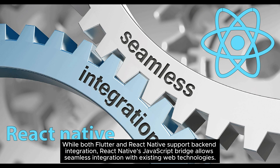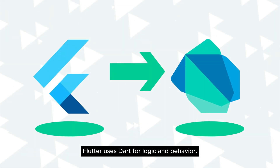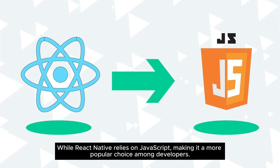While both Flutter and React Native support backend integration, React Native's JavaScript bridge allows seamless integration with existing web technologies. Flutter uses Dart for logic and behavior, while React Native relies on JavaScript, making it a more popular choice among developers.